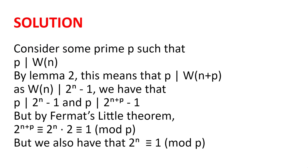Solution. Consider some prime p such that p divides w(n). Then, by Lemma 2, p divides w(n + p), since n is congruent to n + p modulo p. And, as w(n) divides 2^n - 1, we have that p divides 2^n - 1, and also that p divides 2^(n+p) - 1.